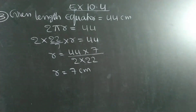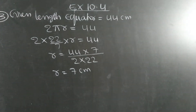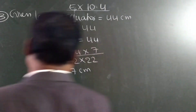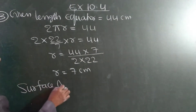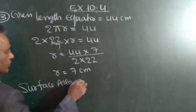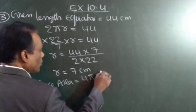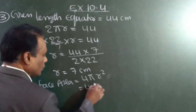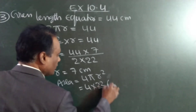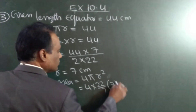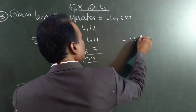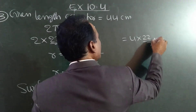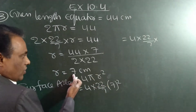Now students, what is the question? Find the surface area. See the formula for surface area of the sphere. Surface area of the sphere is 4πr². So 4 × (22/7) × r, and r is 7.